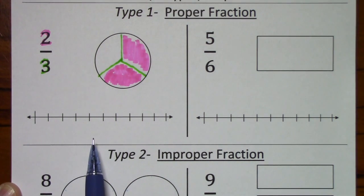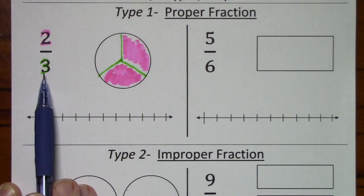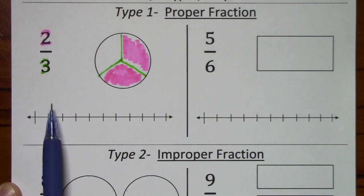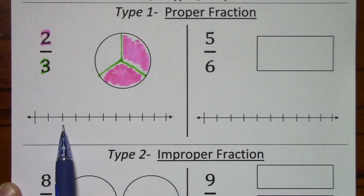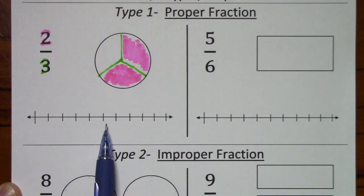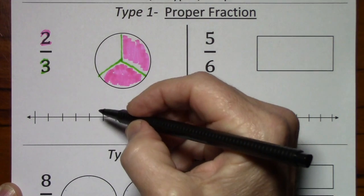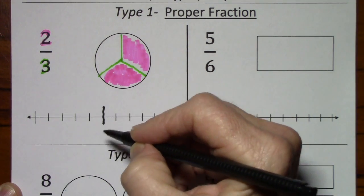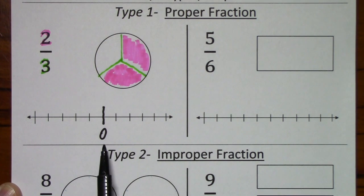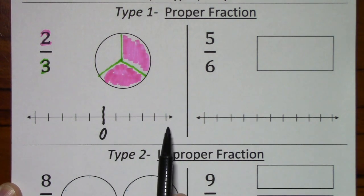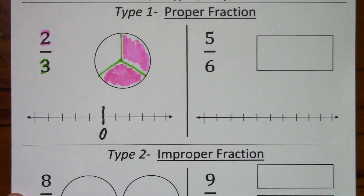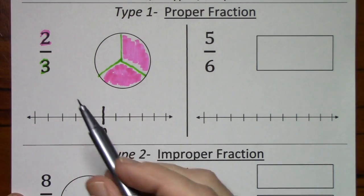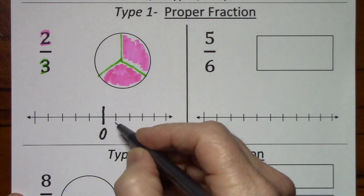If I want to represent two-thirds on a number line, I turn my attention to the bottom number, the denominator. This tells me to divide my number line into thirds — each one of these hash marks is going to represent one-third. I'm going to put zero in the middle, because I'm going to show positive values but also negative values for this example. Because the denominator is three, each hash mark is one-third.